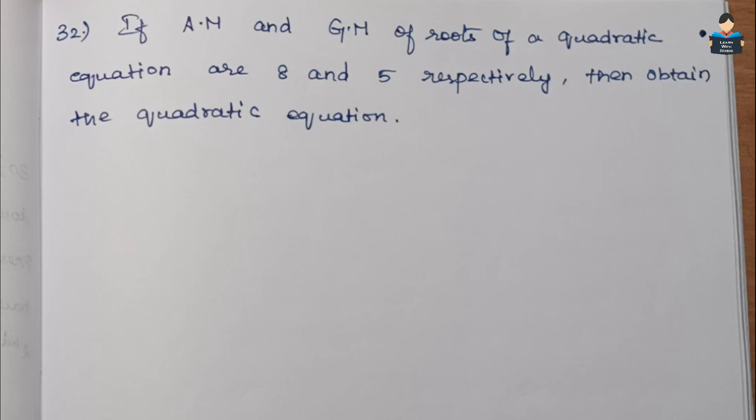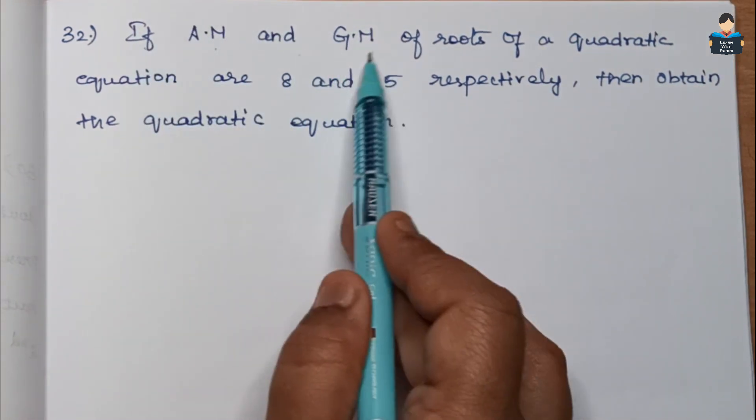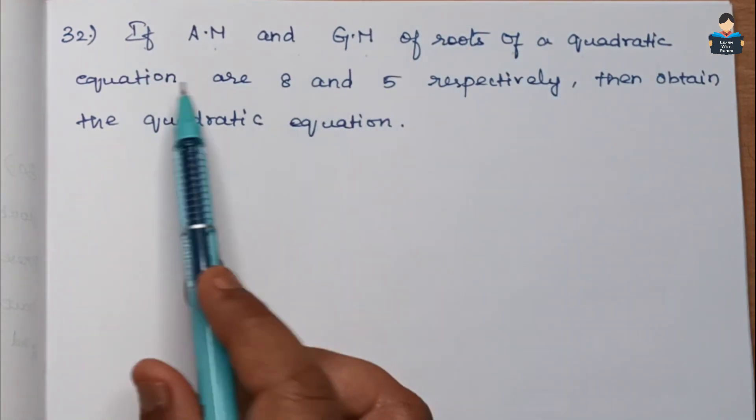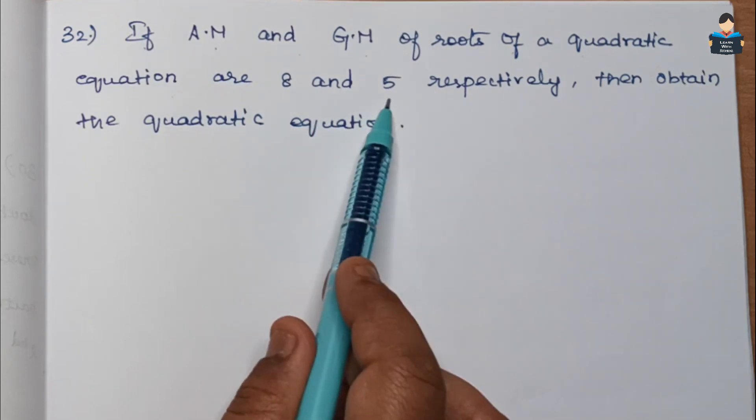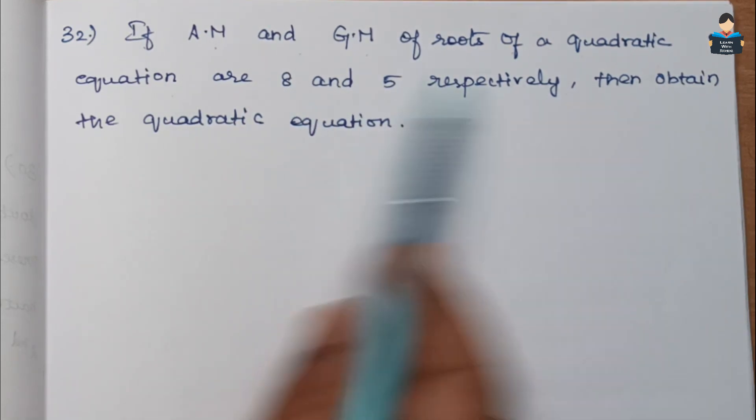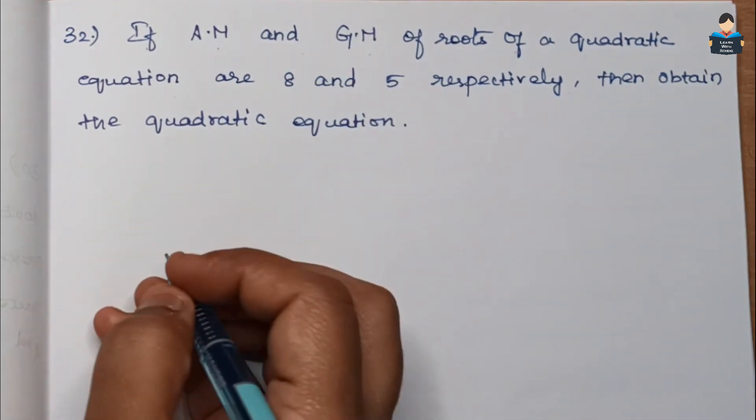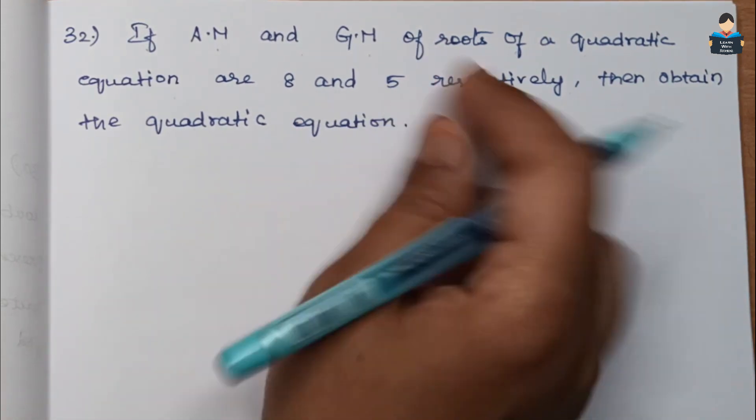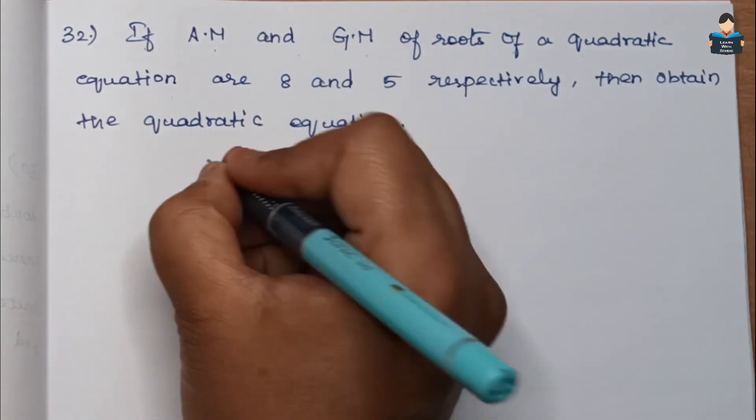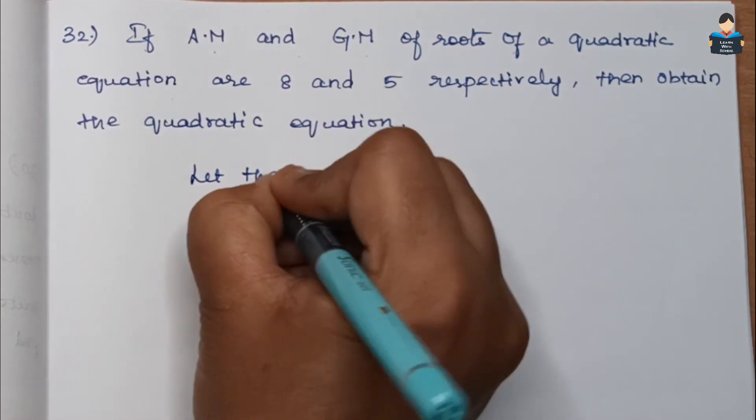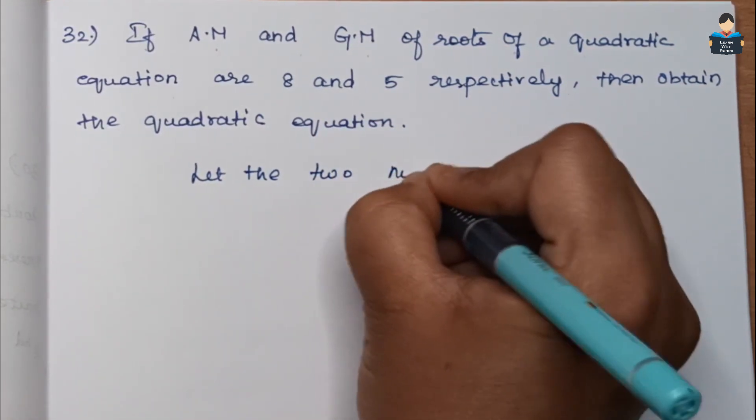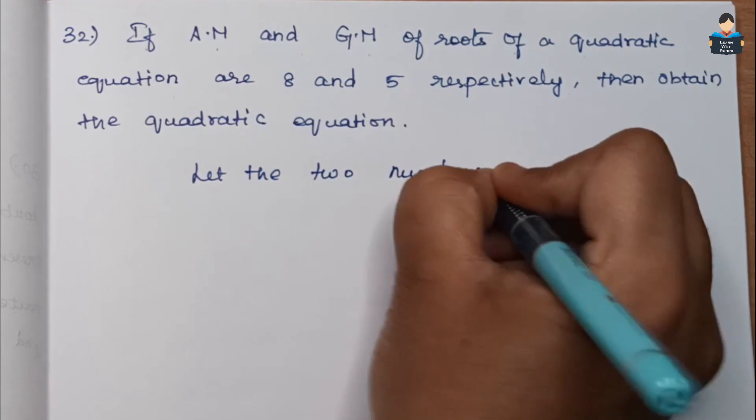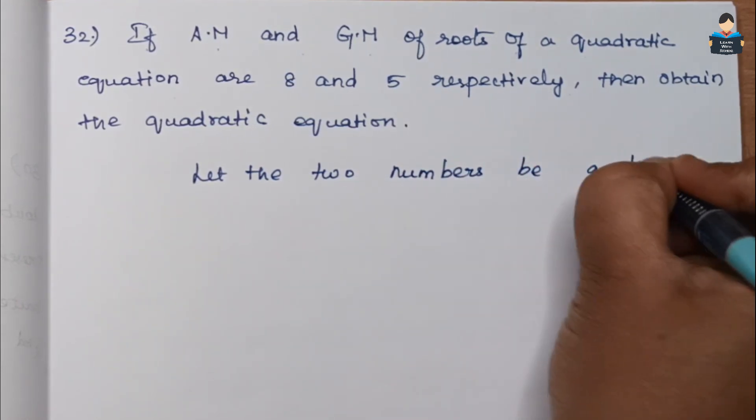Question Number 32: If AM and GM of roots of a quadratic equation are 8 and 5 respectively, then obtain the quadratic equation. Let the two numbers be a and b.